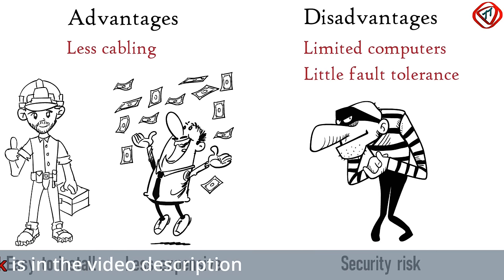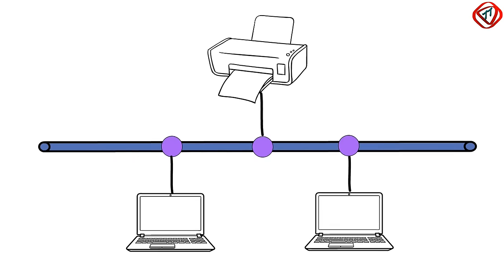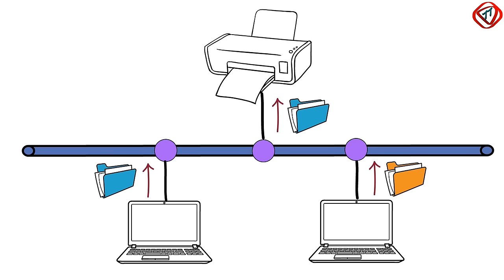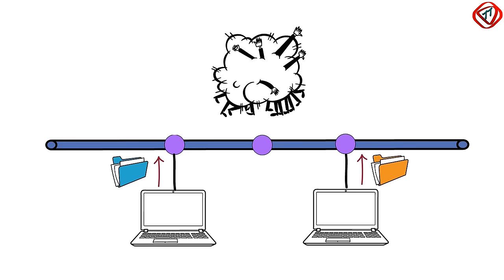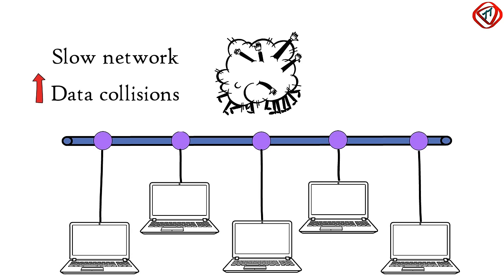A security risk also exists because all computers can hear what other computers are saying on the shared media. In a bus topology, only one computer can transmit data at a time, so while one computer is sending a file to a printer, others have to wait. If other computers start sending data at the same time, it will collide and corrupt the whole data, requiring retransmission. If more computers connect to the same central cable, the network becomes slower and increases the chances of data collisions. It is one of the reasons why bus topology is rarely used in modern computer networks.